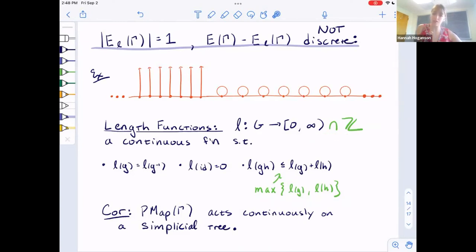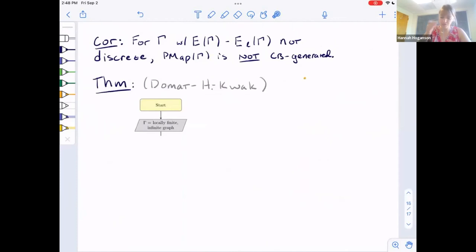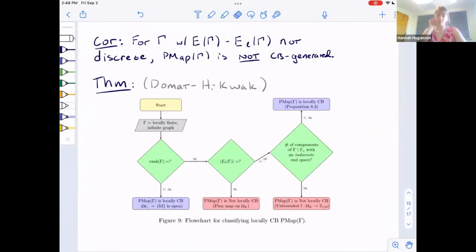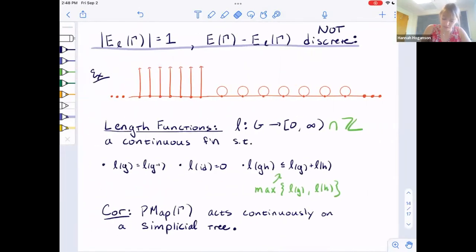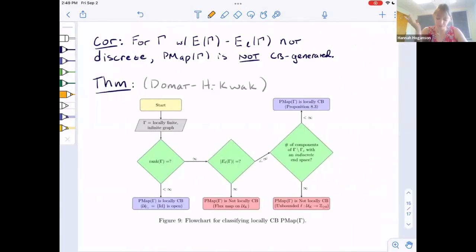In this class of graphs, I can define a length function, which, let me just tell you that a length function is some type of continuous function that has some nice properties. Like the length of an element is the same as its inverse. The length of identity is zero. I satisfy some type of triangle inequality. Things that lengths should have. These types of graphs were able to put length functions on. Actually we realized we can make these length functions really nice. We can make sure their image lands in Z instead of R. We actually get this ultra triangle inequality. Together, this is kind of enough to say that this class of graphs acts continuously on a simplicial tree, which is cool on its own. It was the first step in showing a classification of graphs whose pure mapping classes are or are not CB generated.